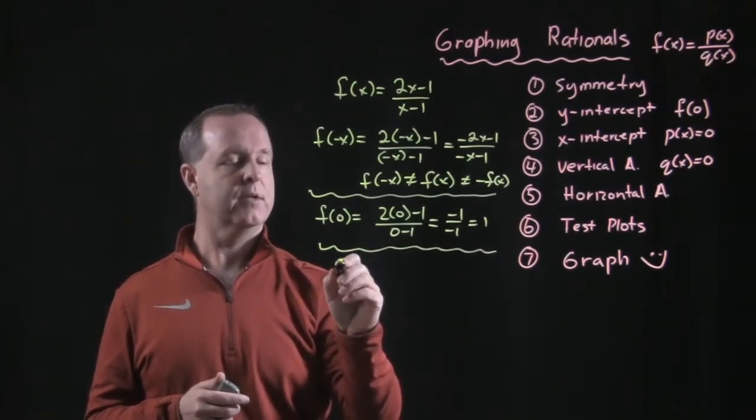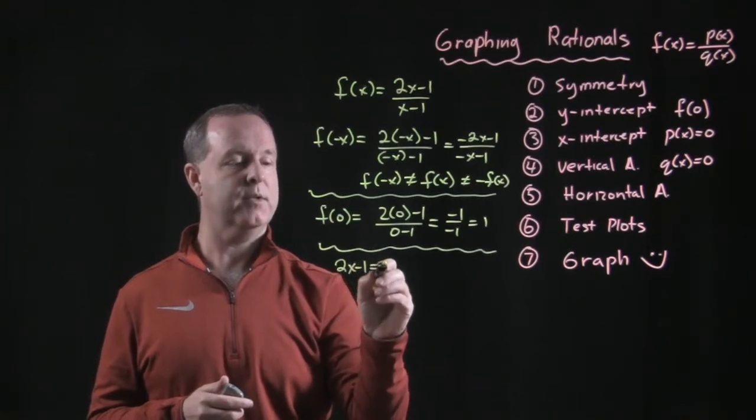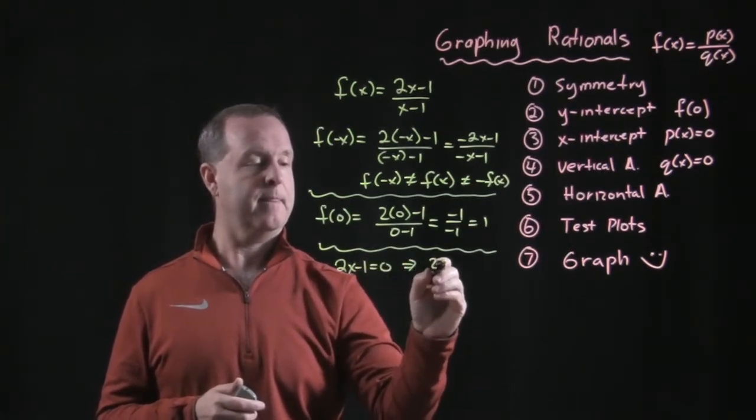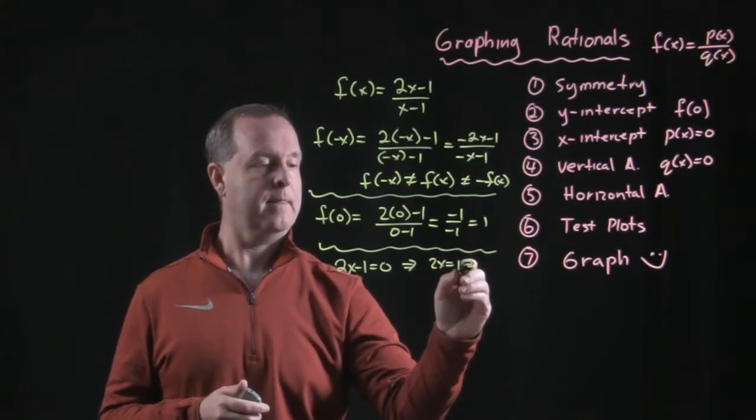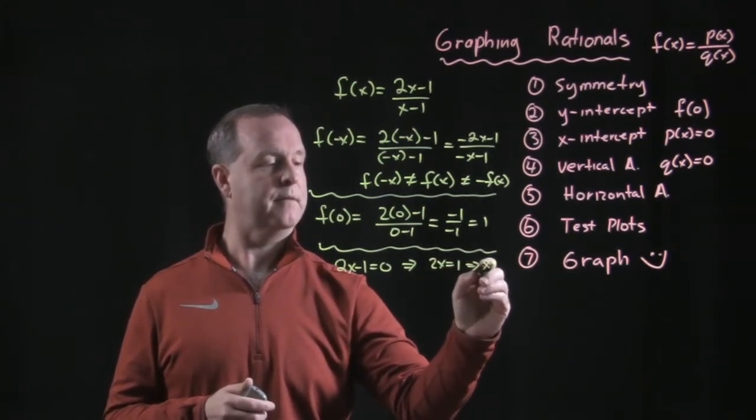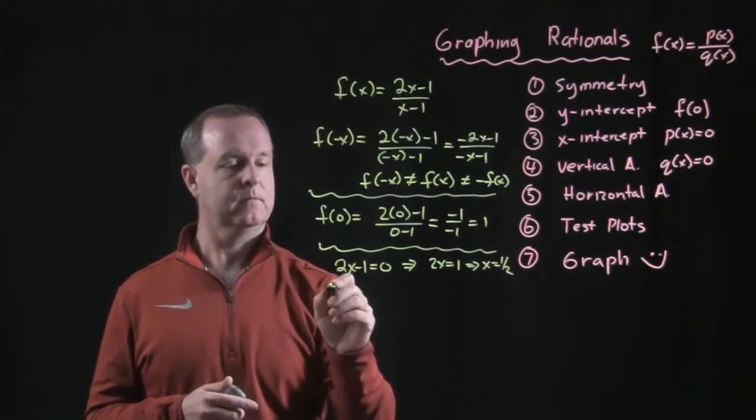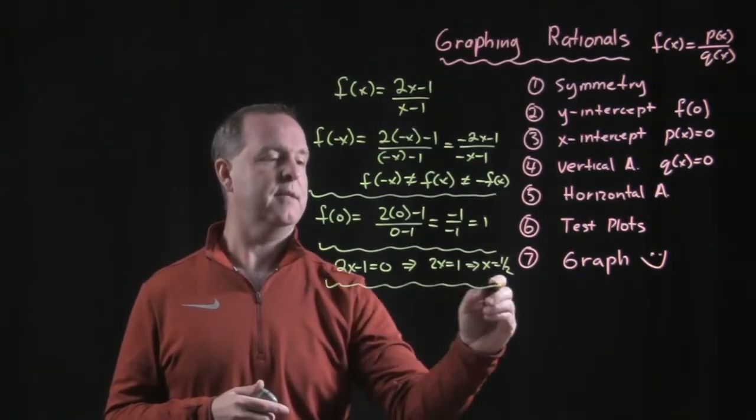No, where that equals zero, sorry. So two x minus one equals zero. That's true. All right, hold on to that piece of information.